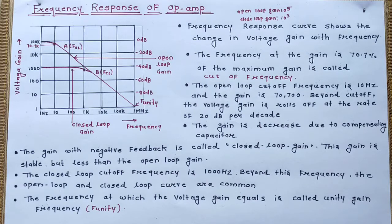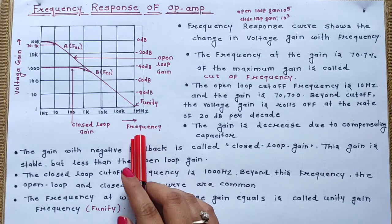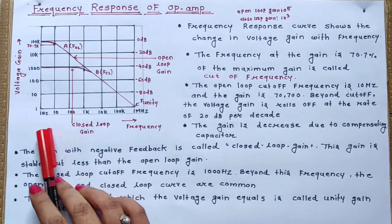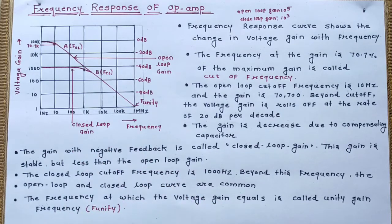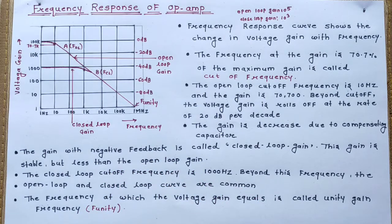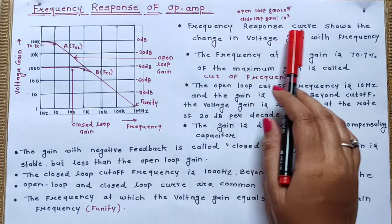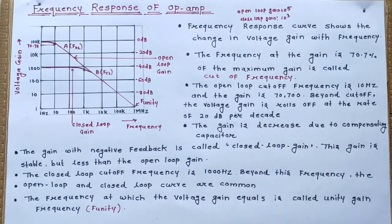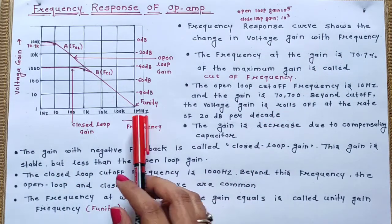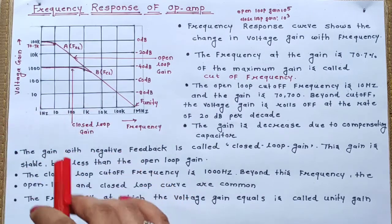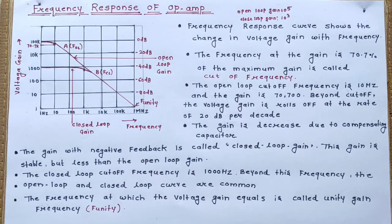In this video, we will study the relationship between frequency and the voltage gain of the operational amplifier — how a change in frequency affects the voltage gain. This is shown in the frequency response curve of the operational amplifier. We will study both open loop gain and closed loop gain.